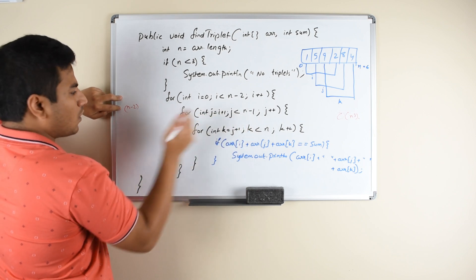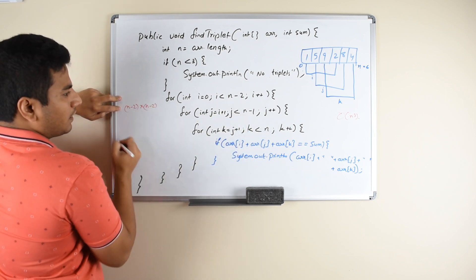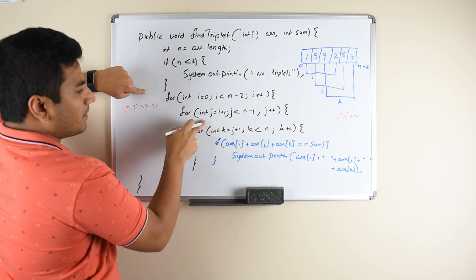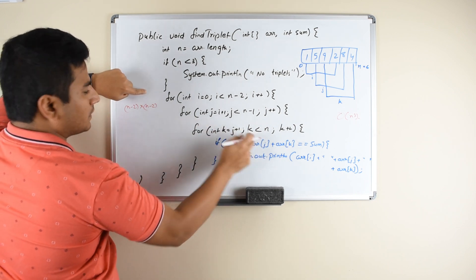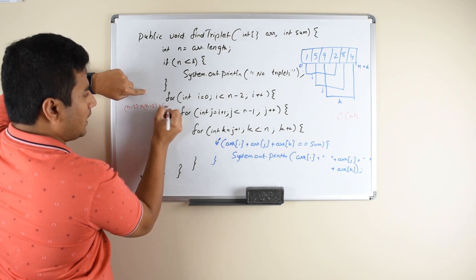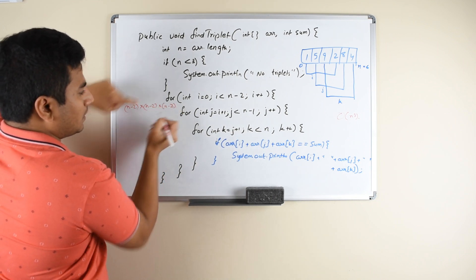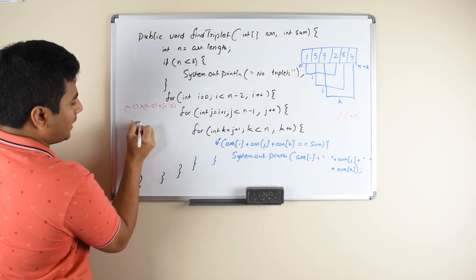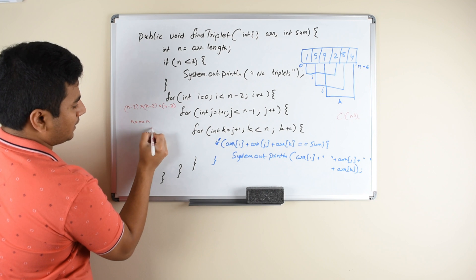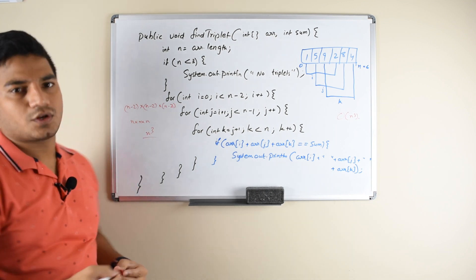n minus 2 operations with the third loop. Remember, we always take only the dominant terms in the time complexity. So it is n into n into n, which is n cube. That is the time complexity of this approach.